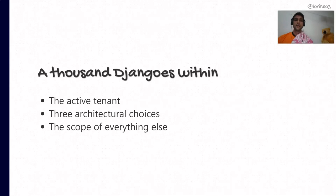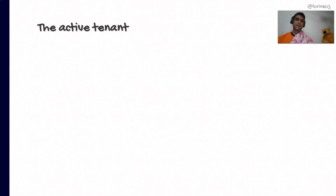Instead of looking at specific packages, today we're going to cover the underlying principles of multi-tenancy in Django. We'll begin by looking at a new concept — the active tenant — then go through the three major architectural choices you'll have to make to implement multi-tenancy, and finally take a look at the scope of everything else in the framework.